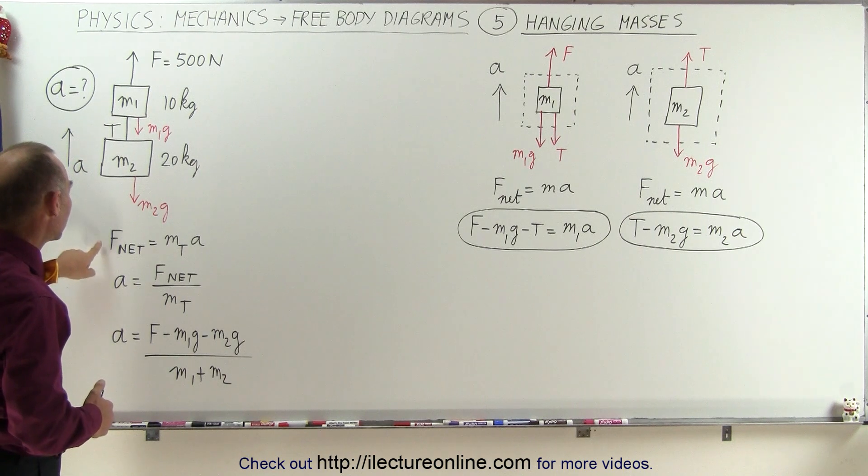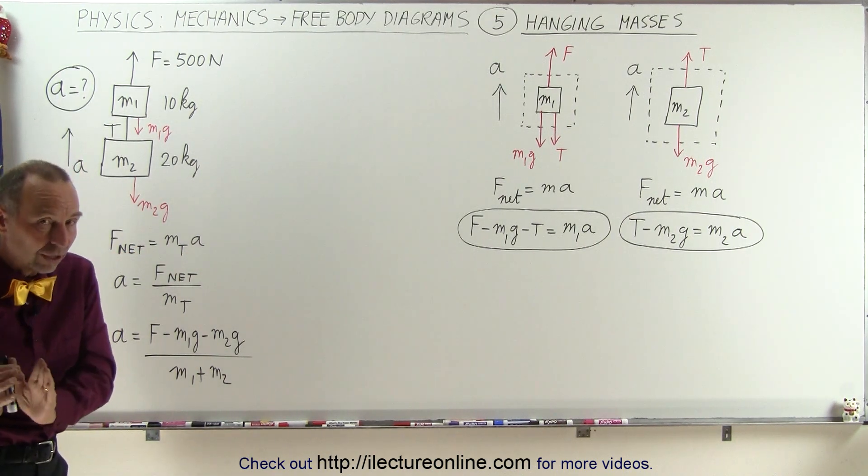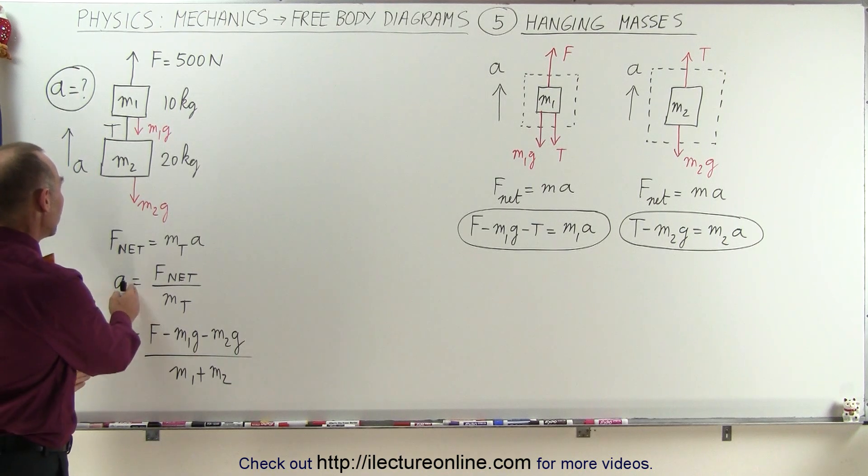If we then use the equation f net equals the total mass times acceleration, and we solve that equation for the acceleration, we get the ratio of the net force divided by the total mass.